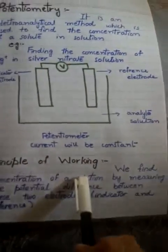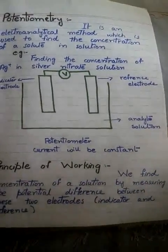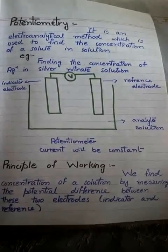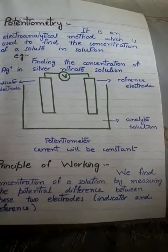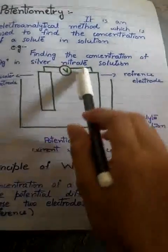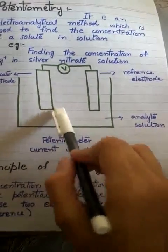Principle of working: We find concentration of a solution by measuring the potential difference between these two electrodes, indicator and reference. What happens when we dip these two electrodes in an analyte solution?